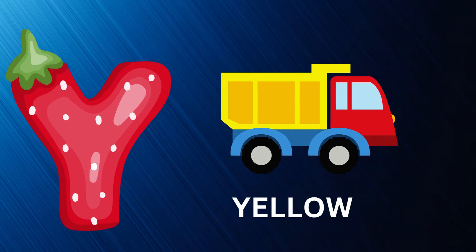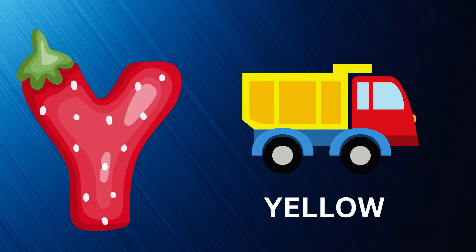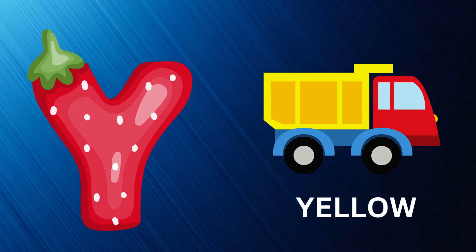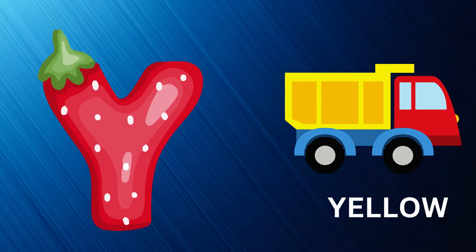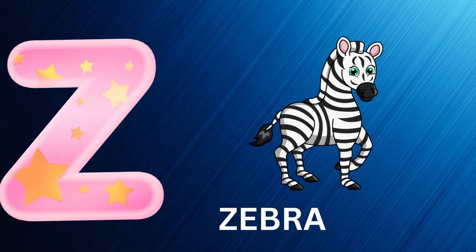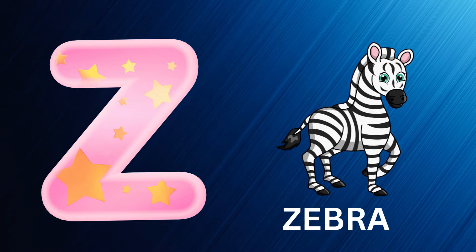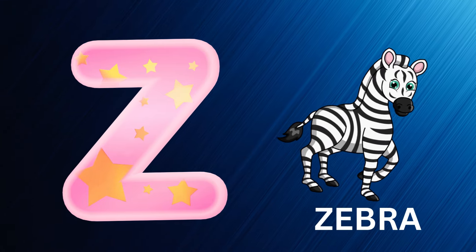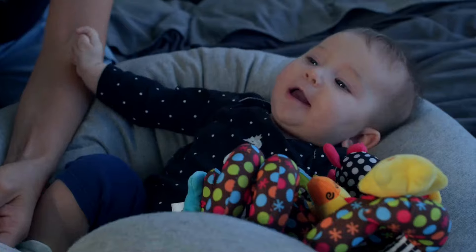Y is for yellow, ye-ye-yellow. Z is for zebra, z-z-zebra.